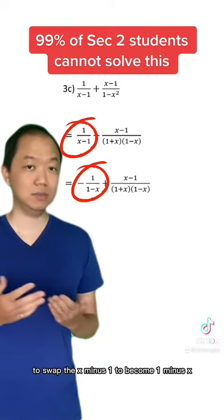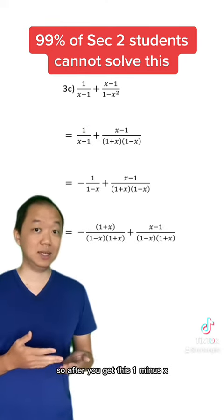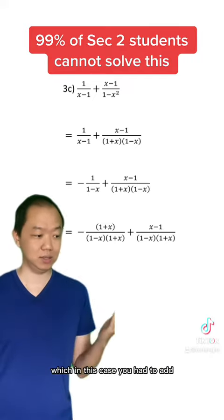Swap the x minus 1 to become 1 minus x. So after you get this 1 minus x, you will want to combine that, but you need to find a common denominator, which in this case...